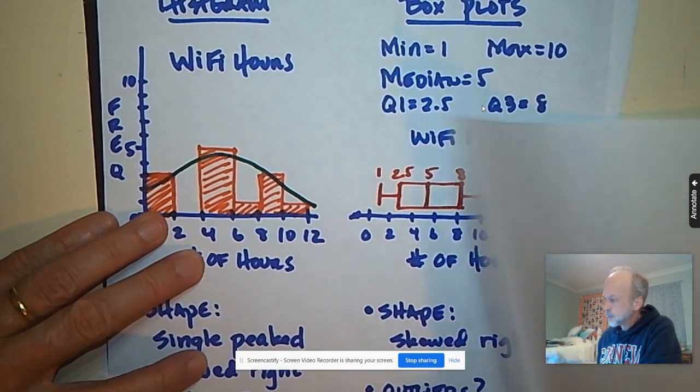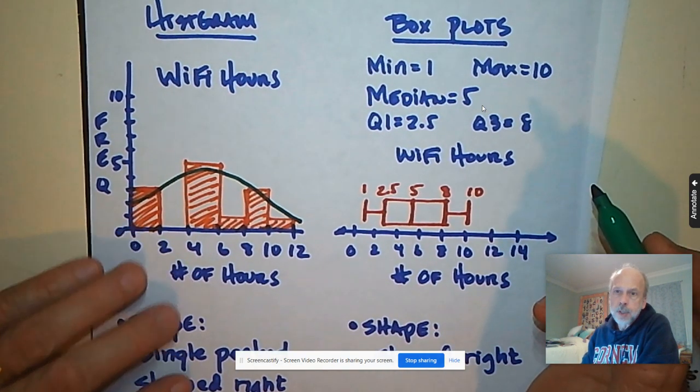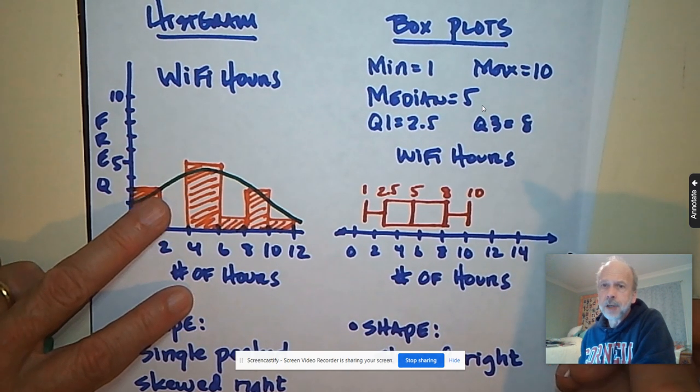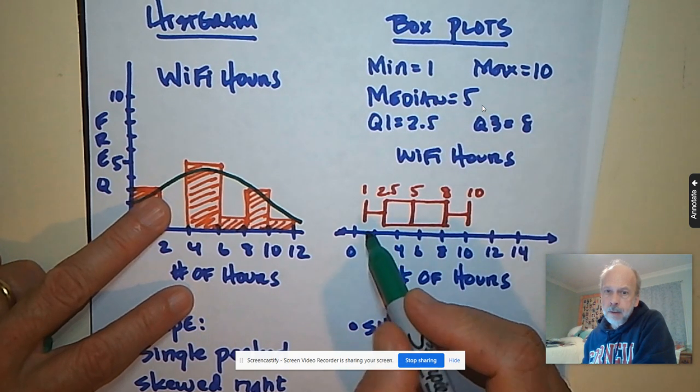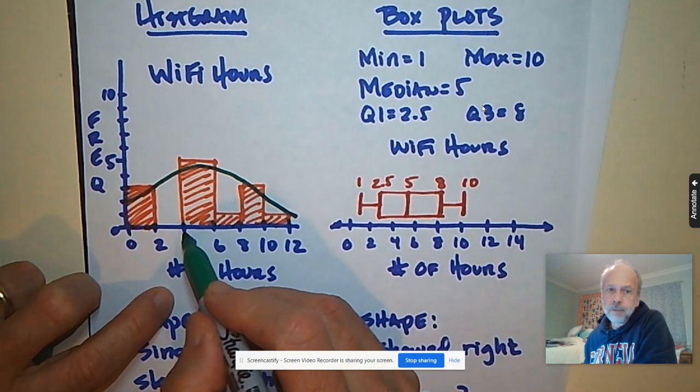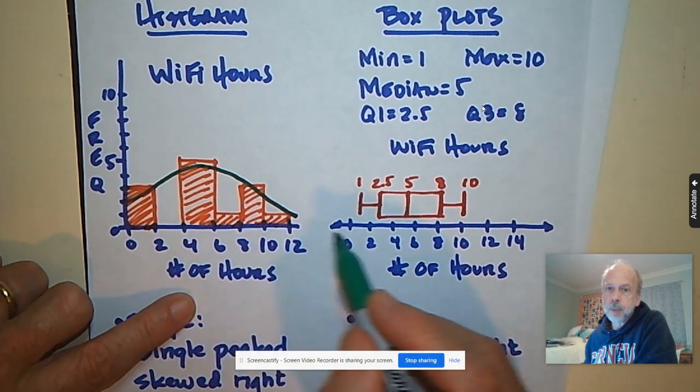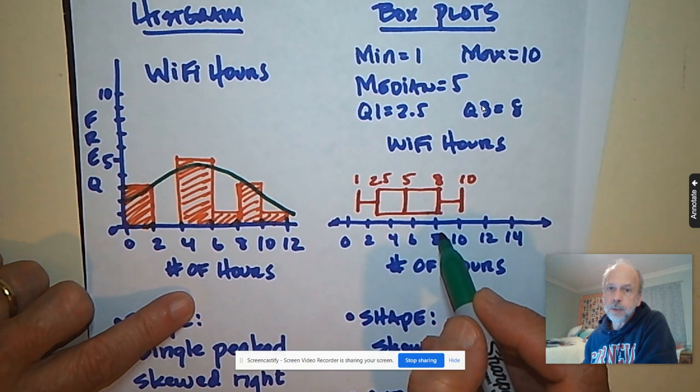My other choice is a box plot. And if I've been using median and quartile and interquartile range, it's pretty easy to make, because I have everything I need. I use five numbers. I make a number line very similar to the bottom of the histogram. My number line has to have a scale that will fit all of my values.